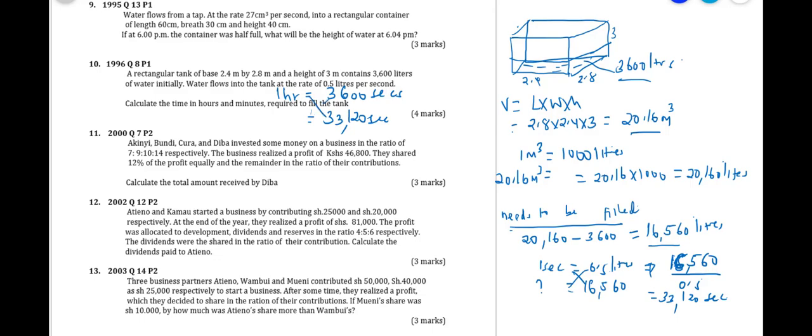So if you cross multiply, this is the same as 33,120 divided by 3600. That gives 9.2 hours. So still we are not through because you are told to get it in hours and minutes.